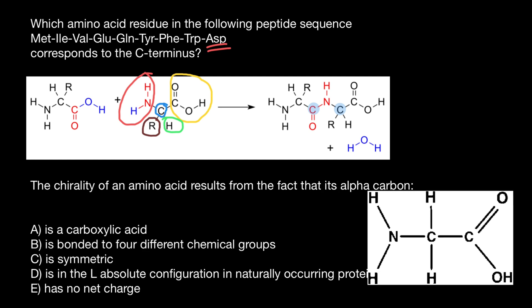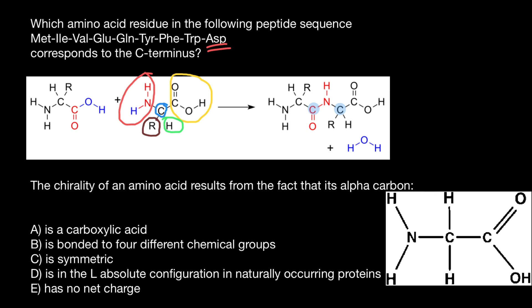There is only one exception, and this is glycine. This amino acid has an amino group, a carboxylic acid group, and hydrogen, but instead of an R-chain it has only one atom, which is also hydrogen. So this alpha carbon is not going to be chiral because it is attached to only three different groups — the fourth group is the same hydrogen as the third. In all the remaining 19 amino acids, this alpha carbon is going to be chiral. So we can choose the correct answer: it's answer B. The chirality of an amino acid results from the fact that its alpha carbon is attached to four different chemical groups.